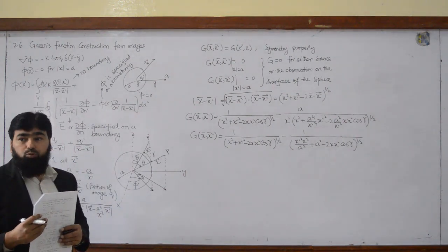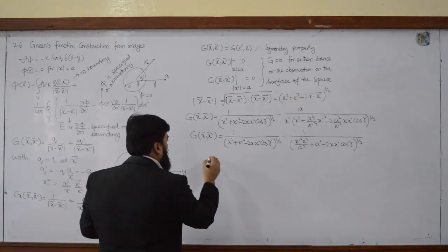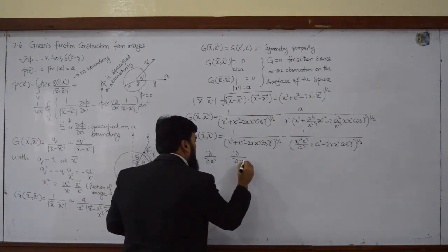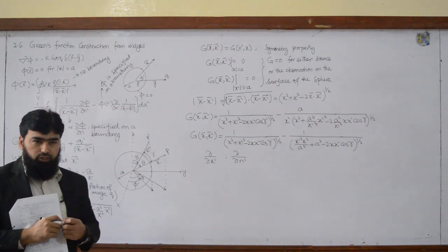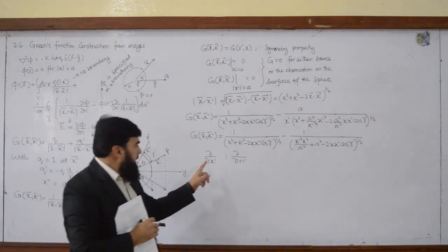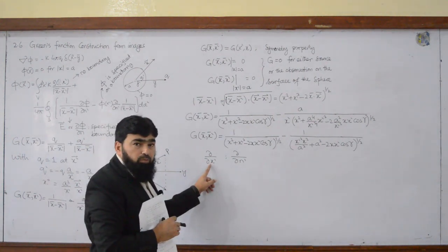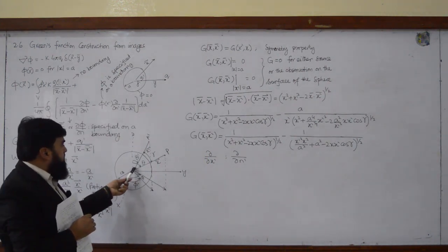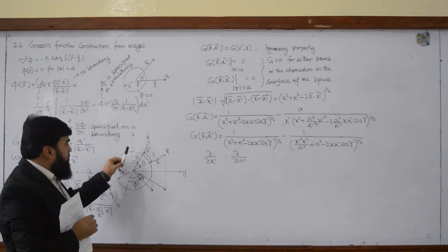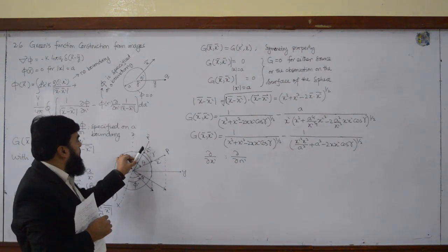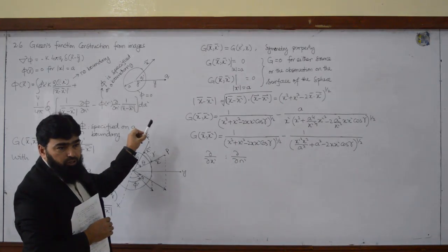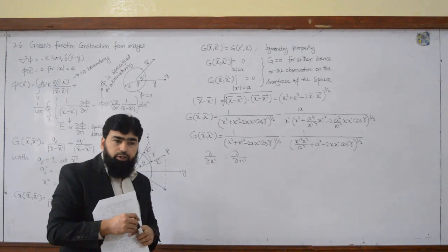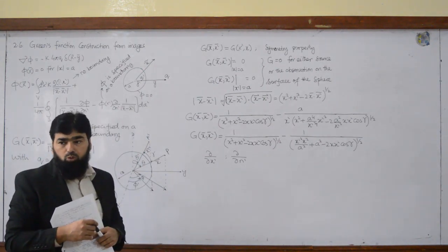Now we will have to decide the difference between curly by curly x prime and curly by curly n prime. What is the difference between these two? Curly by curly x prime means the variation from the center of the sphere in that direction, while curly by curly n prime is the normal derivative from the source.